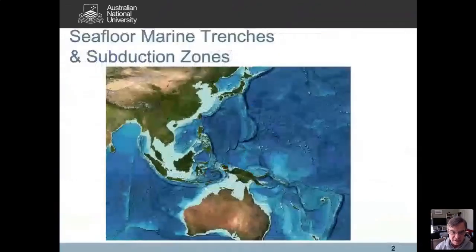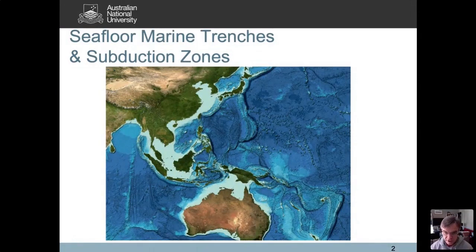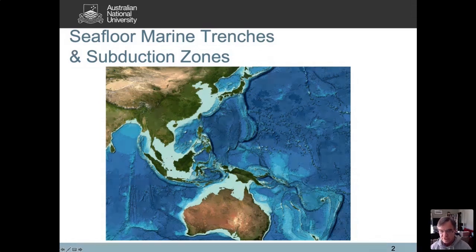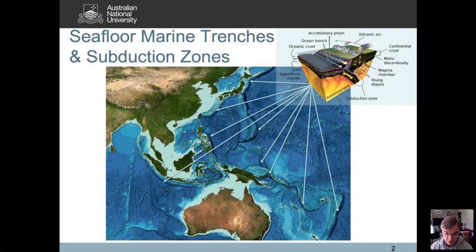I'm going to start with submarine bathymetry. One of the most remarkable features of Earth's bathymetry is the submarine trenches — very deep features. Ocean basins average roughly 3,000 meters depth, but in some trenches it can reach up to 10,000 meters in the Mariana Deep, with other trenches ranging from 6,000 to 9,000 meters deep. These marine trenches are associated with subduction zones, where oceanic lithosphere dives beneath continental or island arc lithosphere.